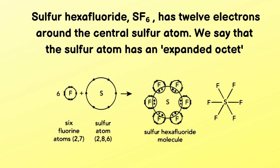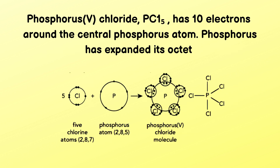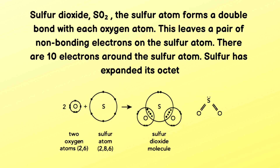Another example is SF₆ (sulfur hexafluoride), which has 12 electrons around the central sulfur atom — this is called an expanded octet, meaning more than eight electrons. PCl₅ is another example with 10 electrons around the central phosphorus atom, also an expanded octet. In sulfur dioxide, the sulfur atom forms a double bond with each oxygen atom, leaving a non-bonding pair on sulfur, giving 10 electrons around sulfur — also an expanded octet.